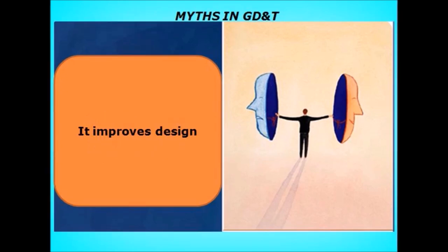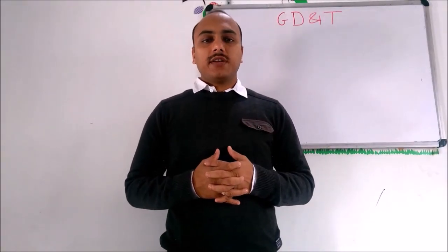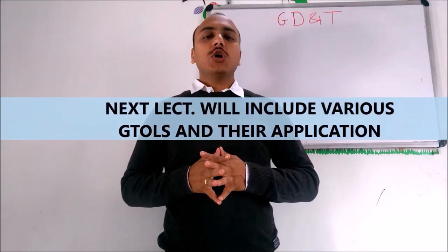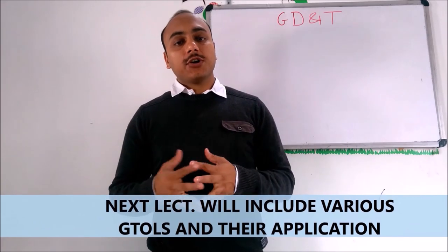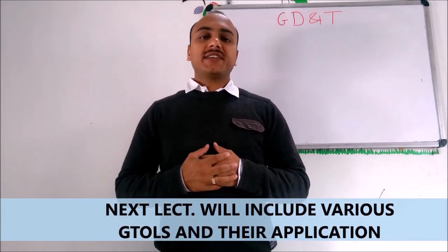Another myth is that GD&T improves design. This is absolutely incorrect. GD&T is a tool with which a designer controls the drawing and communicates with manufacturing so that the part can be manufactured in the required shape and geometry. GD&T provides control — it does not improve the design itself. This concludes Lecture 1 on the basics of geometric dimensioning and tolerancing. In the coming lectures, we will learn about various types of geometric tolerances.